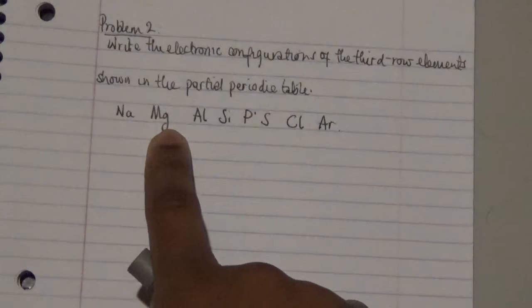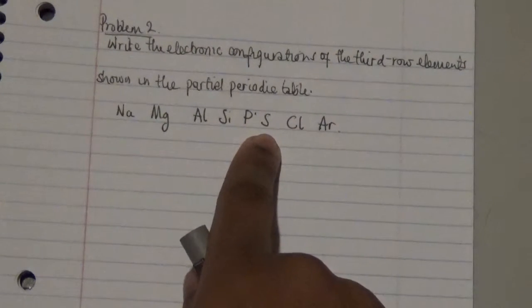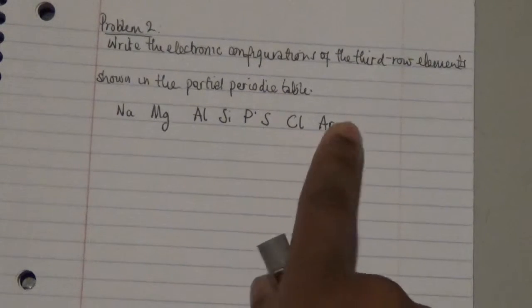We have sodium, magnesium, aluminium, silicon, phosphorus, sulfur, chlorine, and argon.